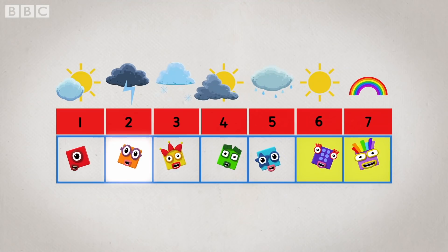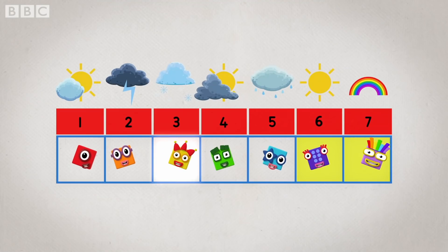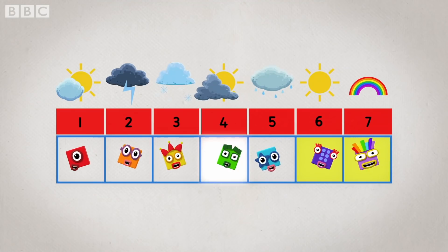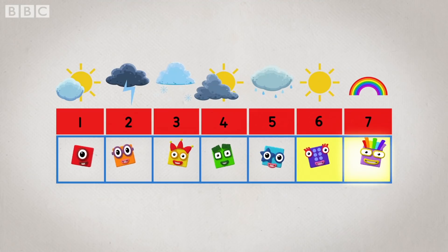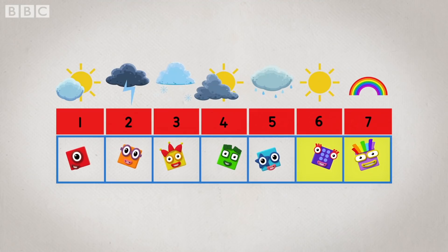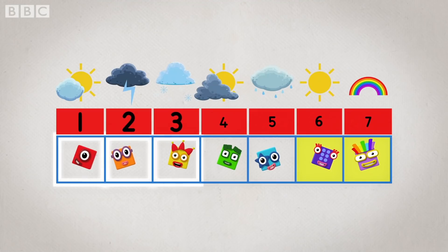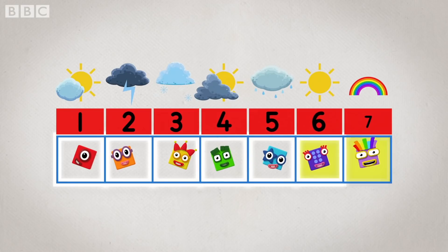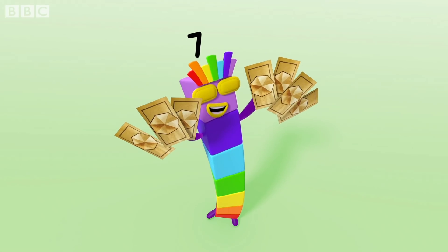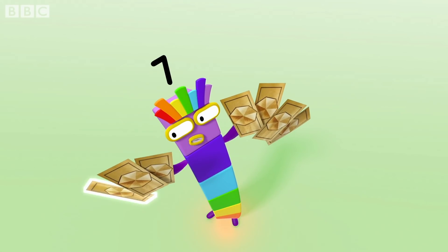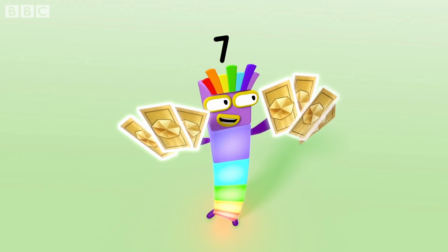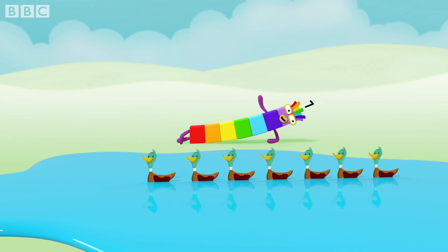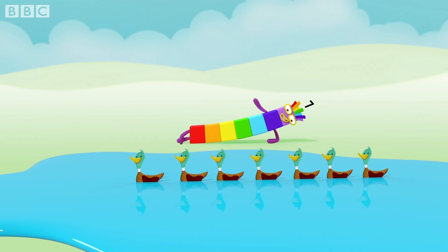Monday, Tuesday, Wednesday, Thursday, Friday, Saturday, Sunday. One, two, three, four, five, six, seven. I've got seven golden tickets. One, two, three, four, five, six, seven. All my ducks are in a row — one, two, three, four, five, six, seven.